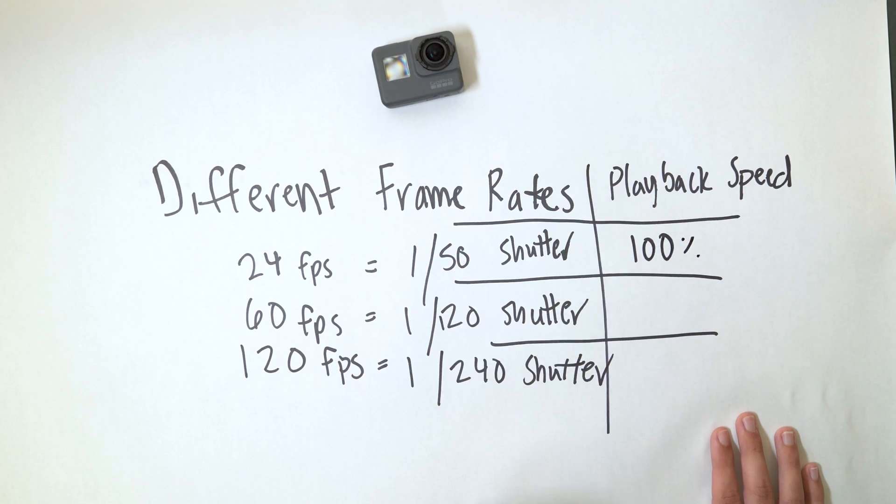Let's talk about playback speed. If you want to play back your video at 100% — meaning you don't want to slow it down in post — 24fps at 1/50th shutter speed will play back at full speed. Sometimes slowing down footage also makes it look cinematic, which is why I like shooting at 60fps a lot. If you shoot at 60fps with your shutter speed at 1/120, that video is going to be played back at 40%.